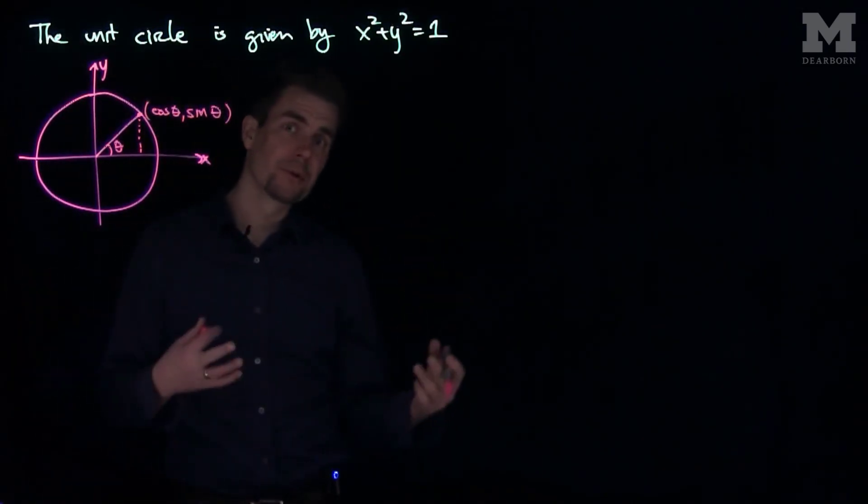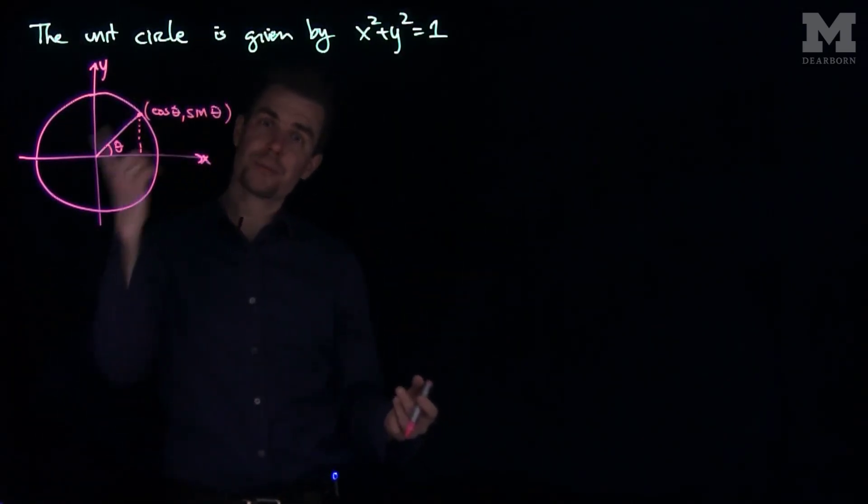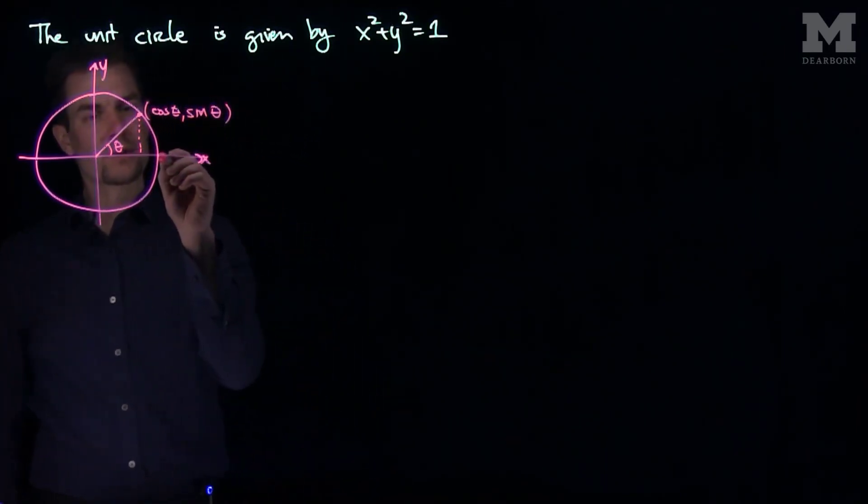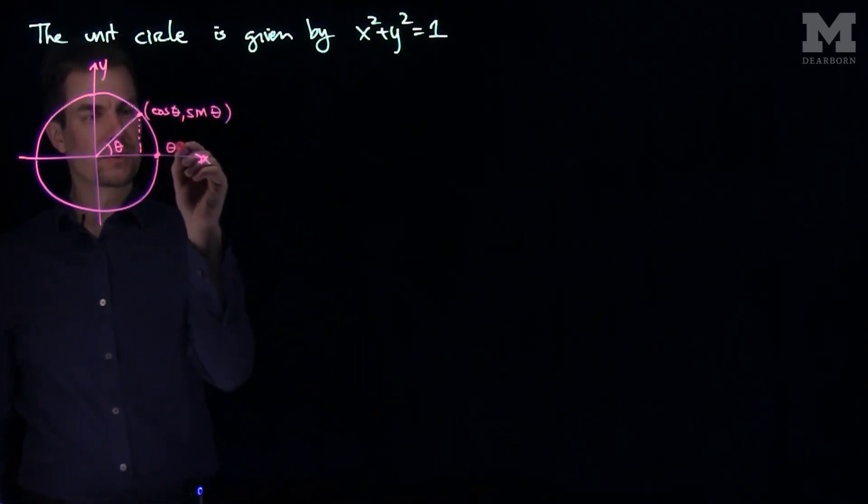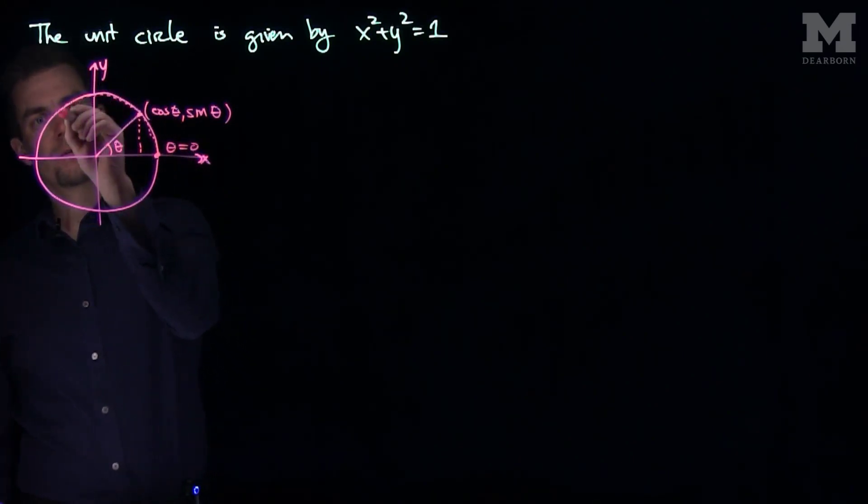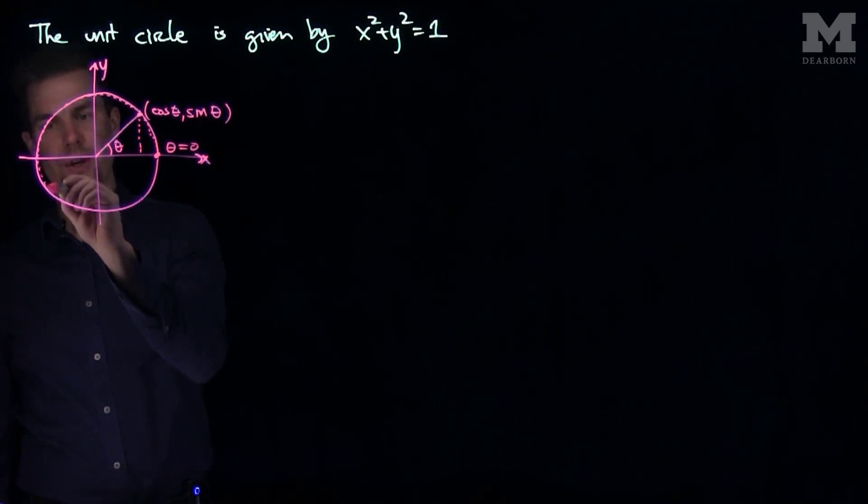And this gives us the natural parameterization of the unit circle. As theta goes from 0 to 2π, I get to every point on the unit circle. So as theta starts at 0, this is theta equals 0, we move around the circle like so, we trace it out like this.